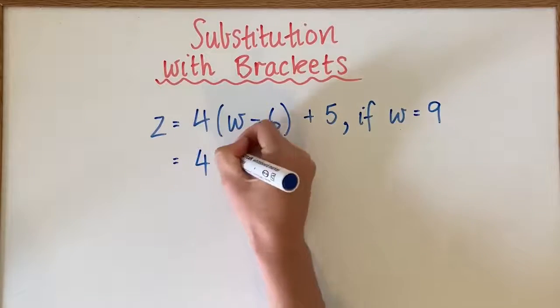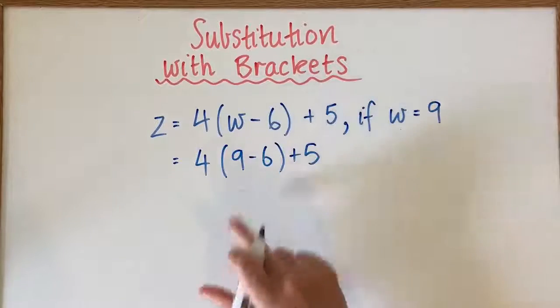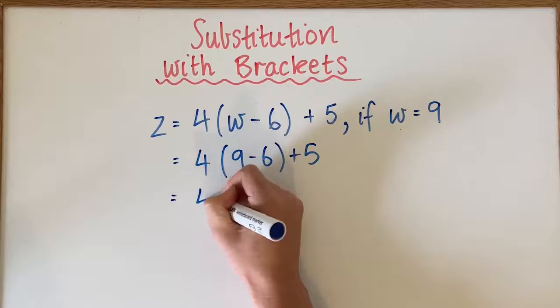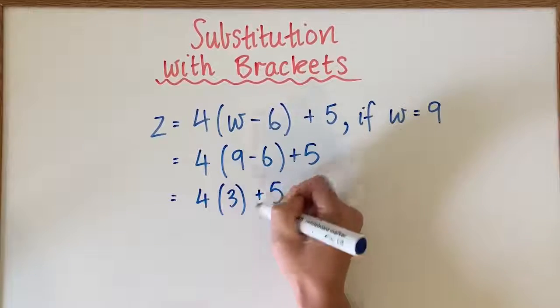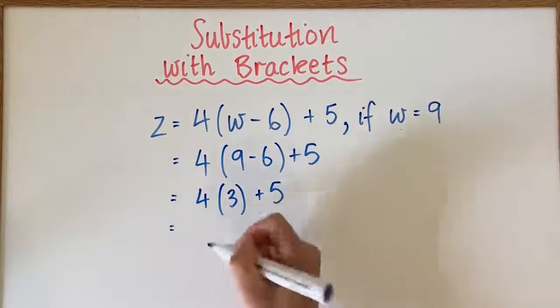So again we do our substitution first so we change the w to a 9, we do what is inside the brackets first, this can get changed to a multiplication.